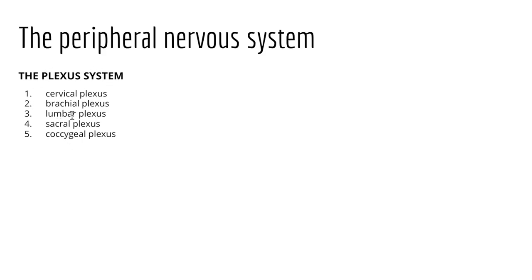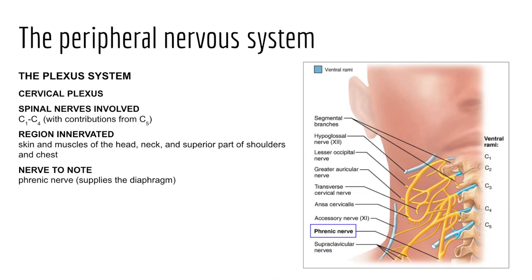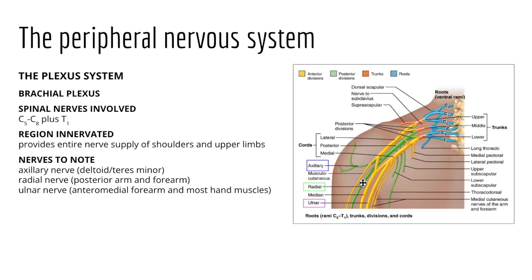A nerve plexus is a complex network of intersecting nerves that distributes sensory and motor fibers throughout the body, helping control muscle movements, coordinate actions, and enhance sensory function. There are five plexus systems: cervical, brachial, lumbar, sacral, and coccygeal. The cervical plexus is formed by the ventral rami of spinal nerves C1 through C4, with some contribution from C5, innervating the skin and muscles of the neck, ear, back of the head, and parts of the shoulders and chest. A key nerve here is the phrenic nerve, the major motor and sensory nerve of the diaphragm.